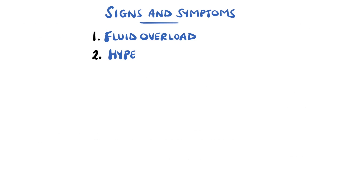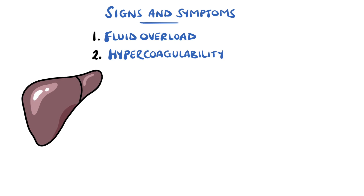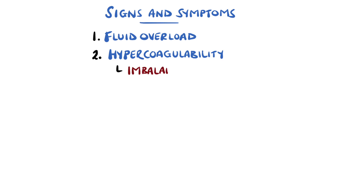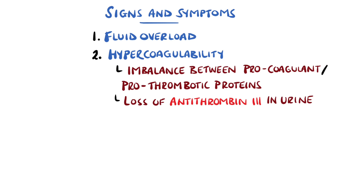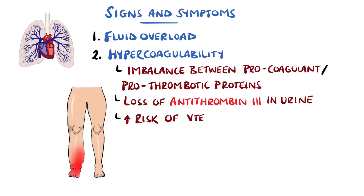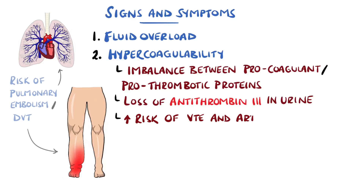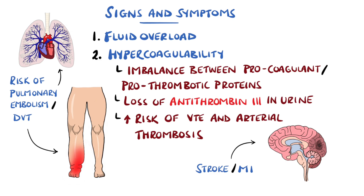Hypoalbuminemia also predisposes to hypercoagulability, because the liver is stimulated to produce more proteins, ultimately leading to an imbalance between procoagulant and prothrombotic proteins. In particular, there is a loss of antithrombin-3 through the urine, which favours hypercoagulability. This can predispose to venous thromboembolisms like DVT and pulmonary embolism, but can also cause arterial thrombosis like myocardial infarction and stroke.